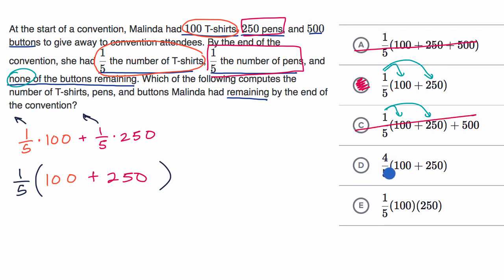This one is saying four-fifths of the number of T-shirts and the number of pens. Well, once again, that's not what they told us. They tell us one-fifth of the number of T-shirts and the number of pens. You could rule that out.